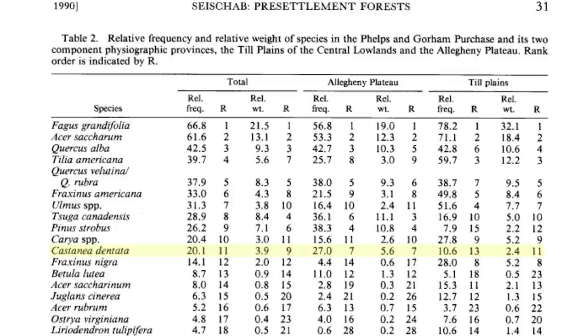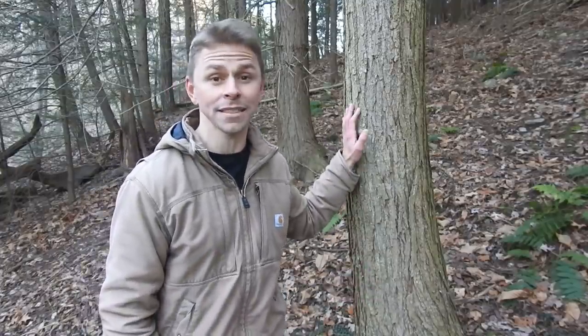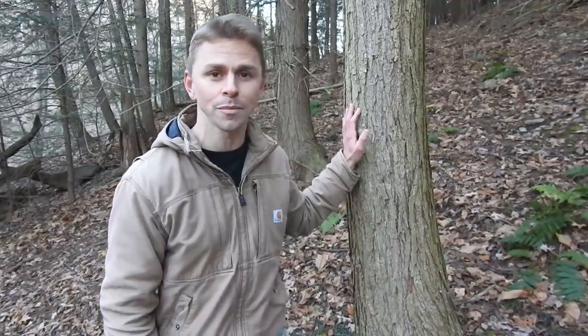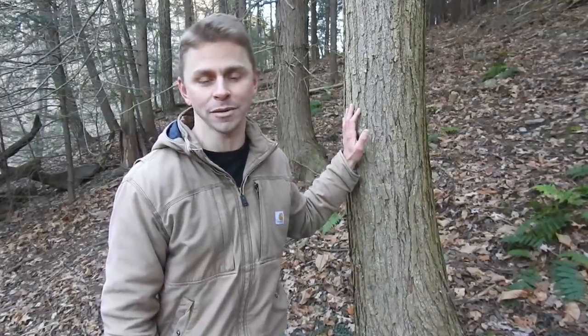So what's going on here? Was American chestnut ever a dominant tree in eastern forests prior to the introduction of chestnut blight? Well, the answer is: it depends. It depends on how we define the word 'dominant,' and it depends on what we mean by 'eastern forests.' Dominant in this context implies most abundant, and as we just learned, American chestnut was not the most abundant tree in several pre-European settlement forests.